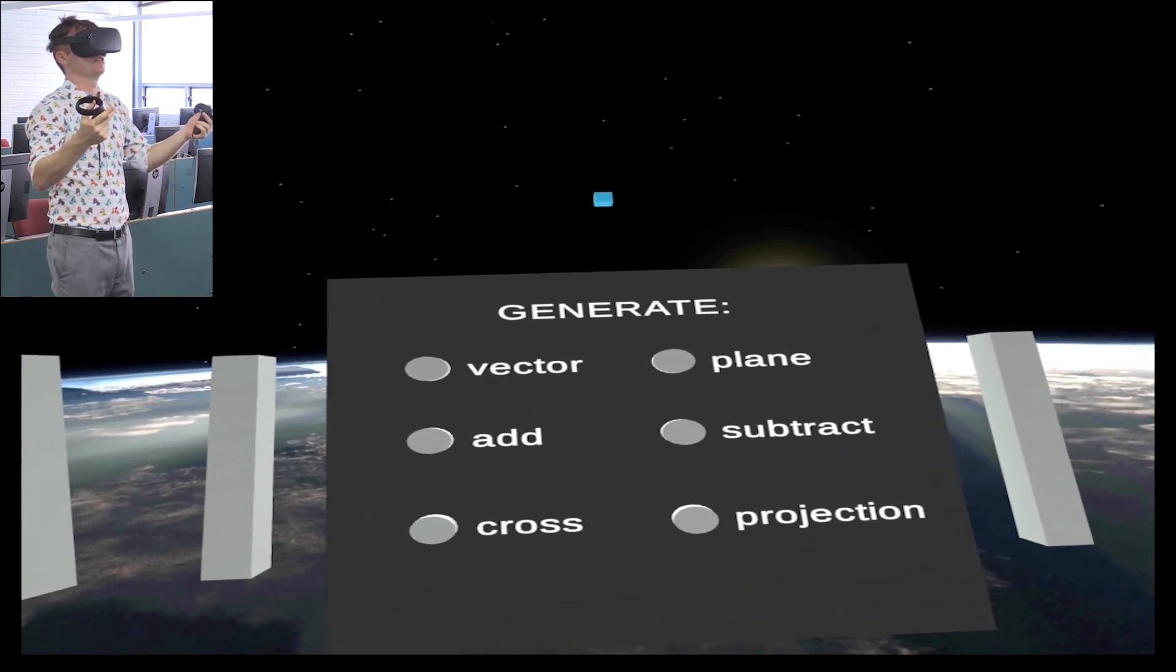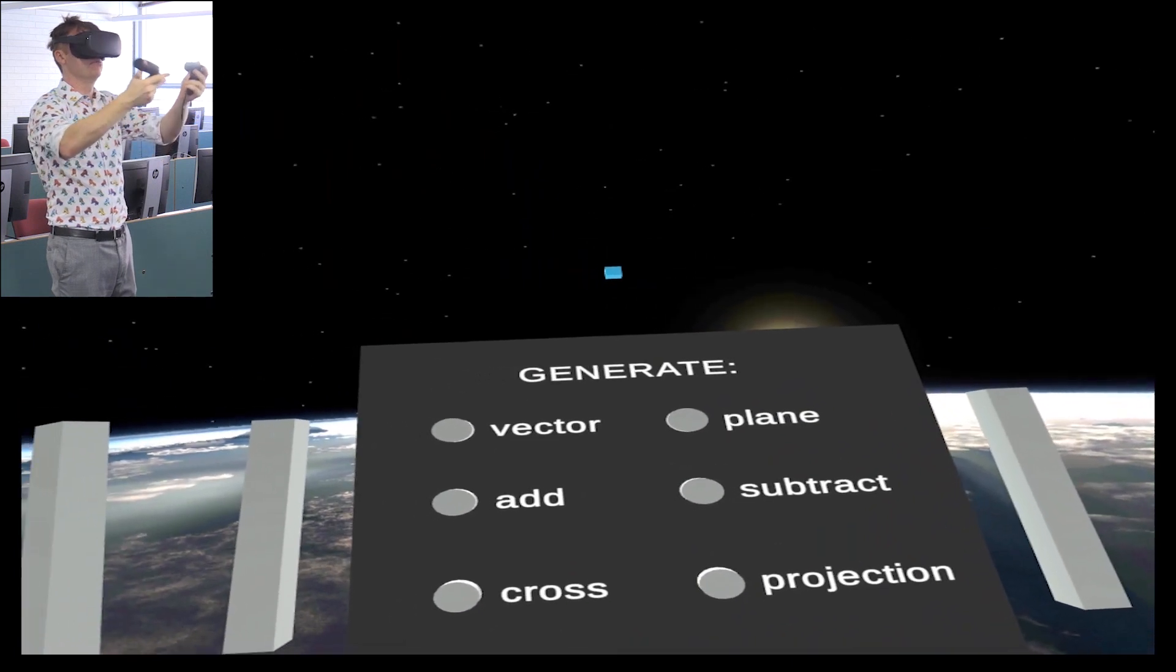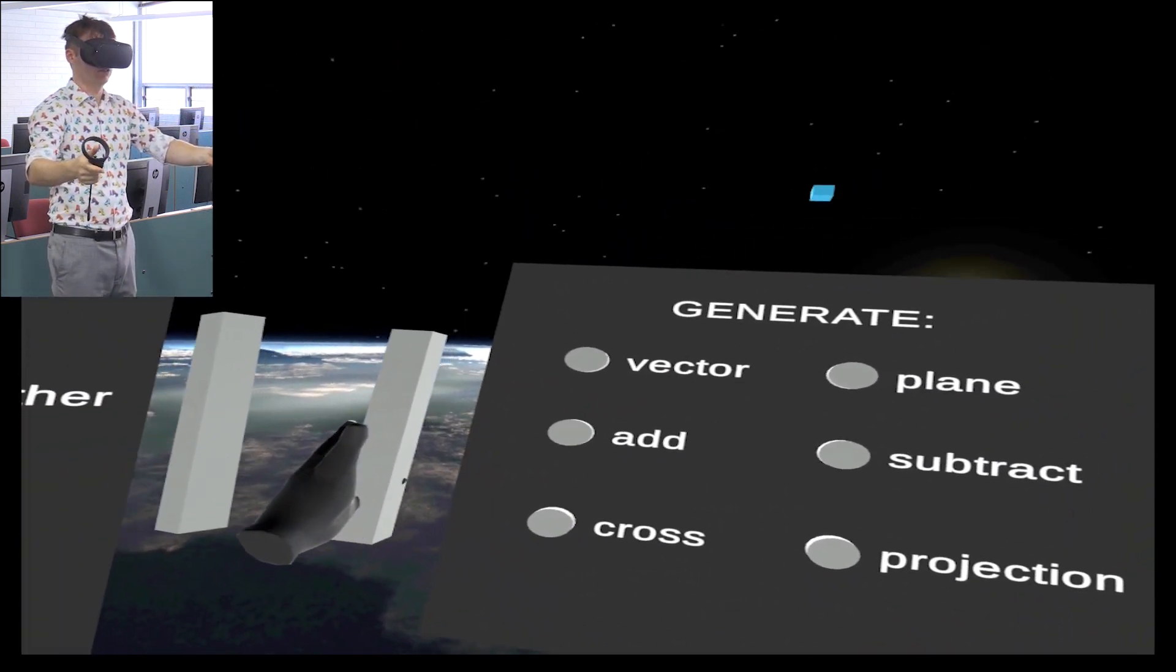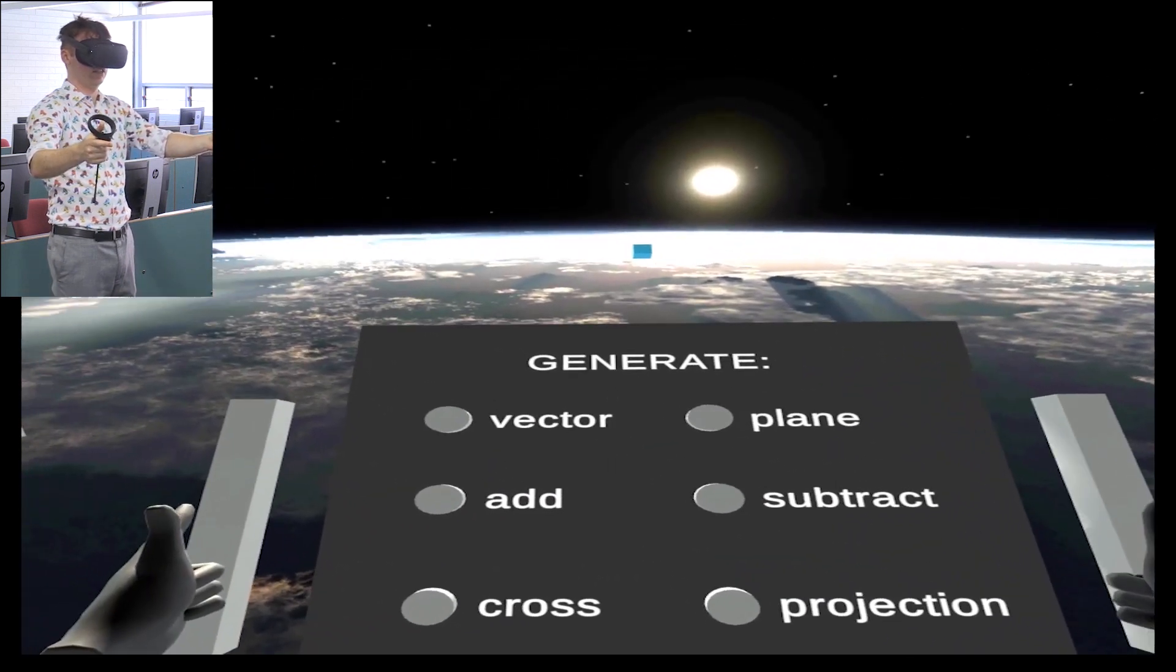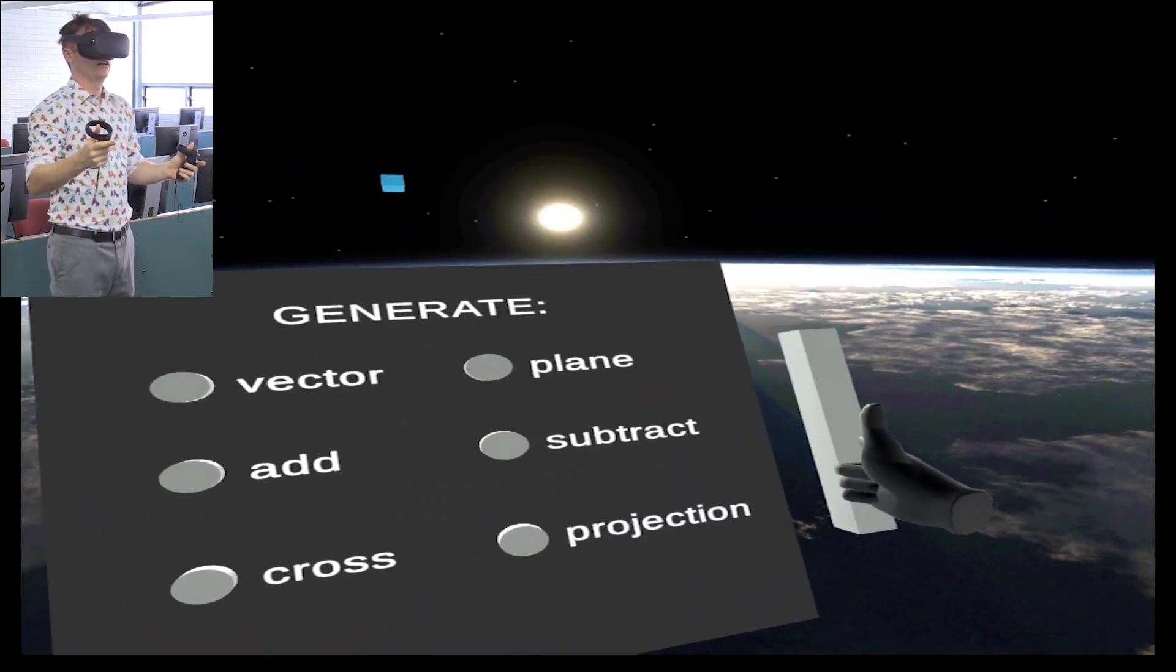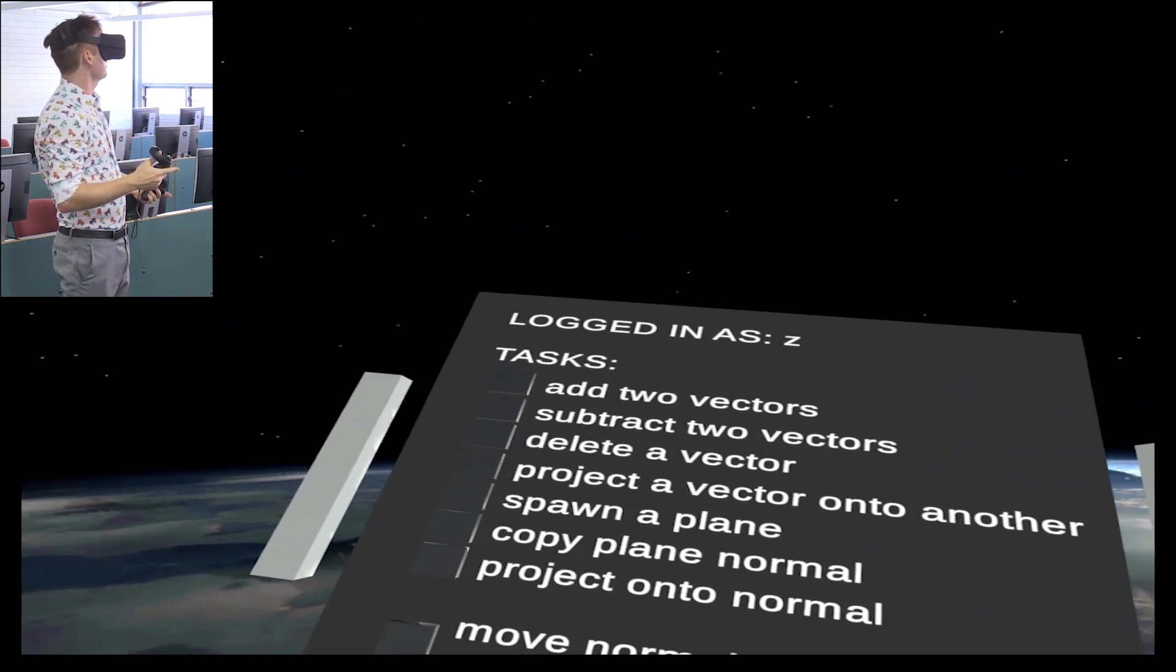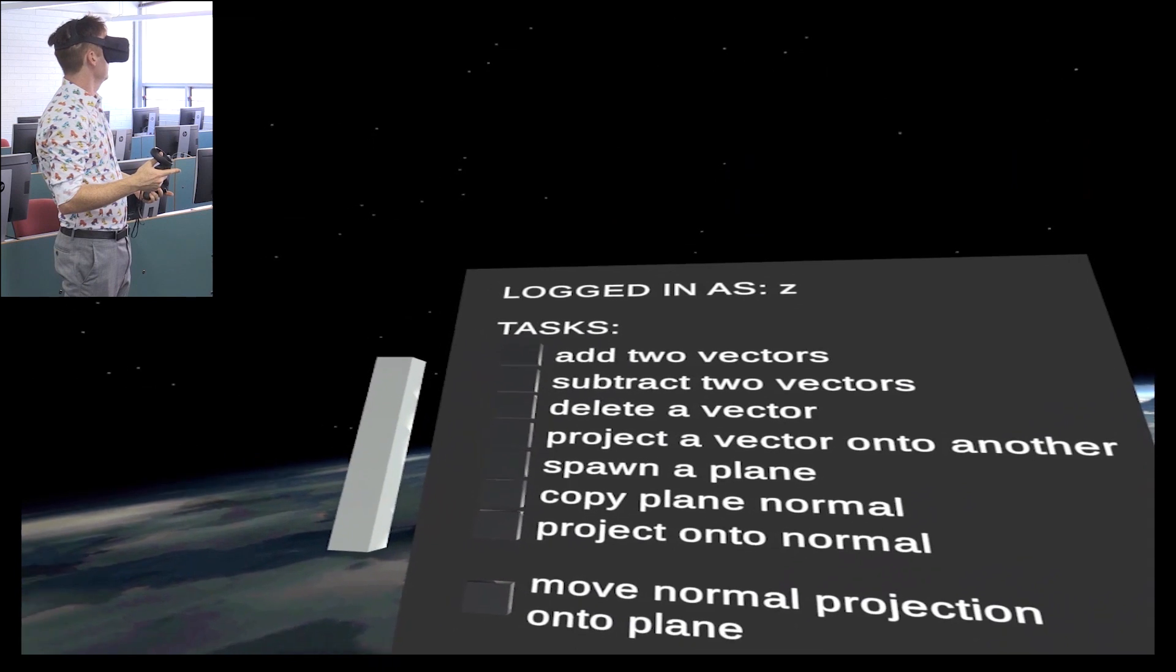Here we are. I logged in and I got some menu before me telling me all the wonderful things I can generate. I can hold the menu and it's got vector and plane and a bunch of stuff right on it. Let's put that there. Over here, I've got a bunch of tasks. Interesting.